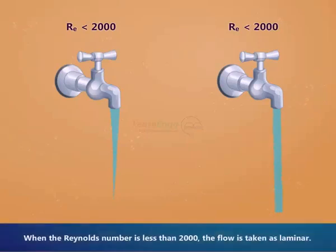When the Reynolds number is less than 2000, the flow is taken as laminar.